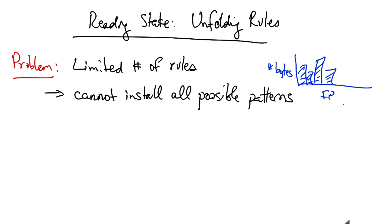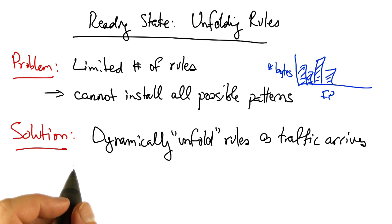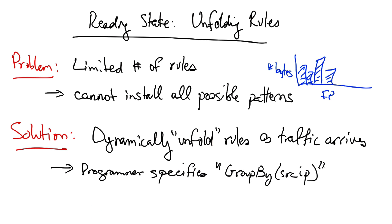It's simply not possible to install all of these possible rules. The solution is to have the runtime system dynamically unfold rules as traffic arrives. A programmer would specify something like a group by source IP address, and the runtime system would dynamically add OpenFlow rules to the switch as traffic arrives, thereby guaranteeing that there are only rules in the switch that correspond to active traffic.